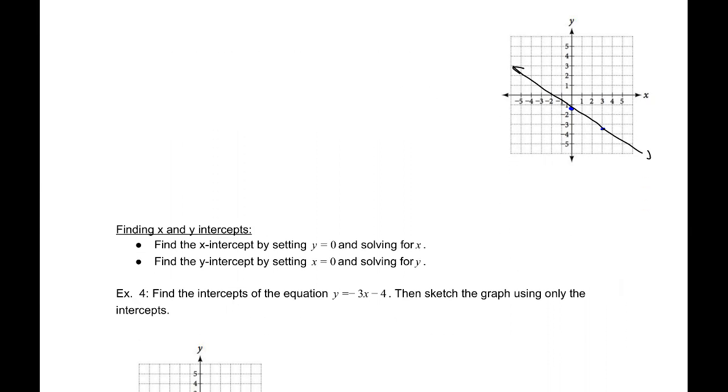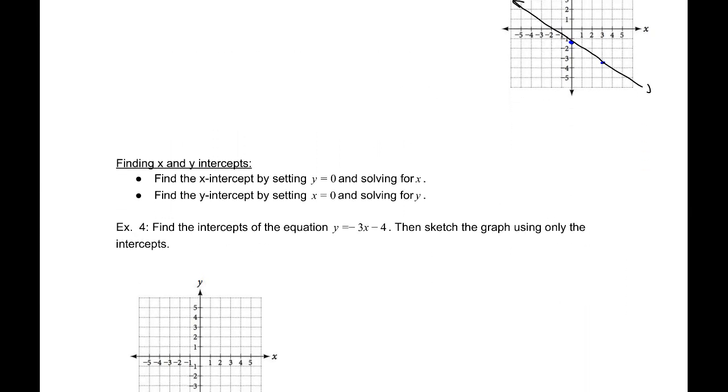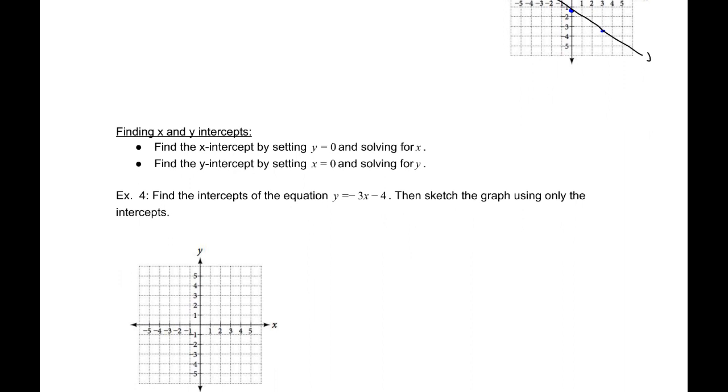Example 4. Find the intercepts of the equation y = -3x - 4. Then sketch the graph using only the intercepts. To find the x-intercept, we set y equal to 0 and therefore we can solve for x. That would be the x-intercept. To find the y-intercept, we'll set x equal to 0, and then solve for y. So we set the opposite coordinate equal to 0.